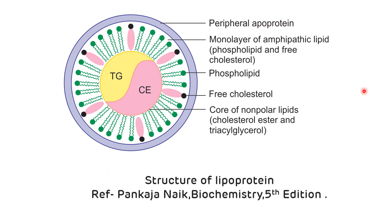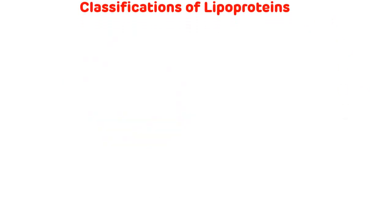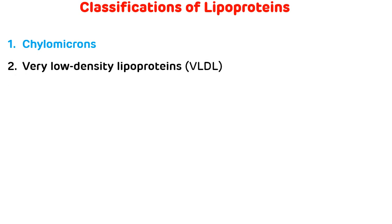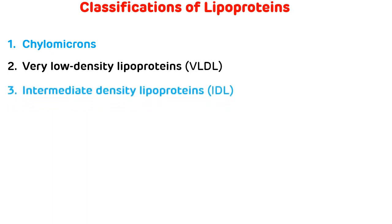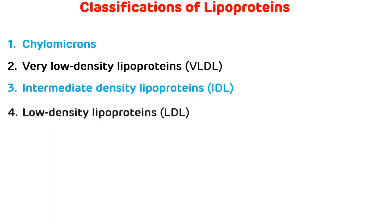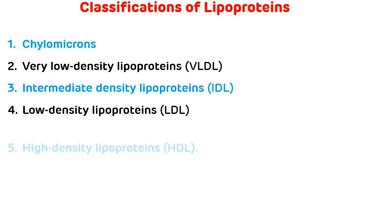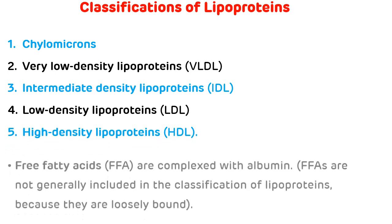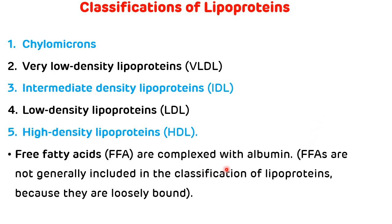This picture shows the structure of lipoprotein. Classification of lipoproteins: lipoproteins are classified under five major categories based on separation by ultracentrifugation. The first class is chylomicrons, second is very low density lipoproteins, third is intermediate density lipoprotein, fourth is low density lipoprotein, and the fifth is high density lipoprotein. Free fatty acids which are complexed with albumin are not generally included in the classification because they are very loosely bound.